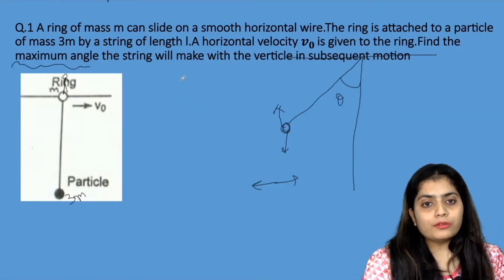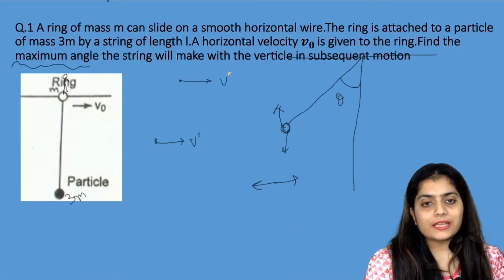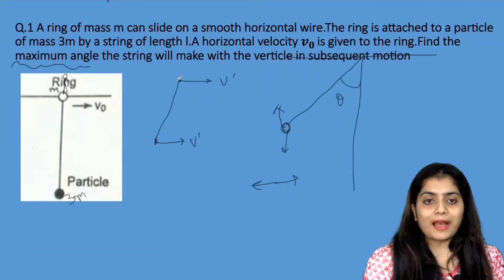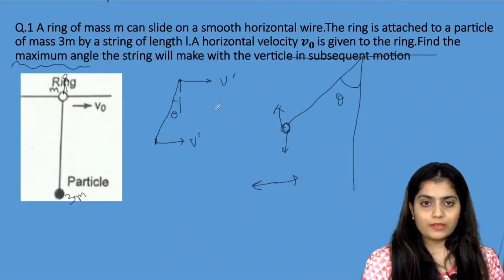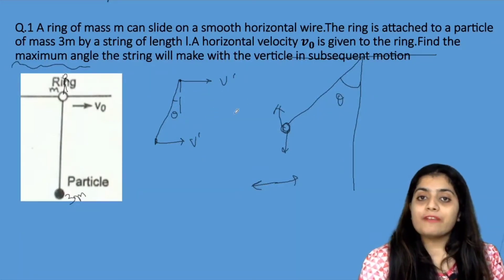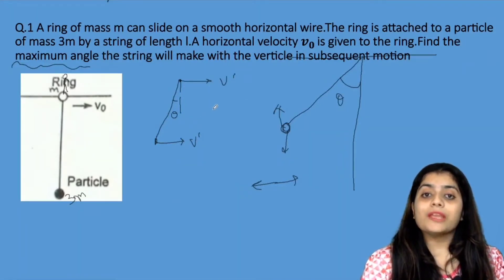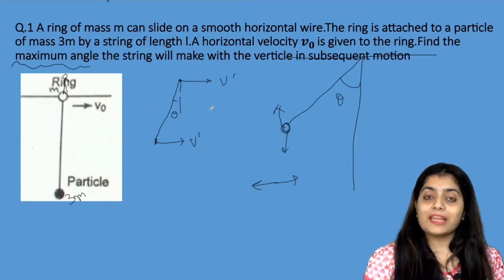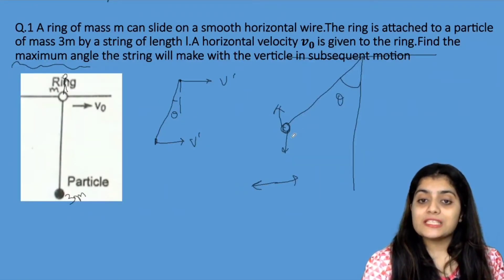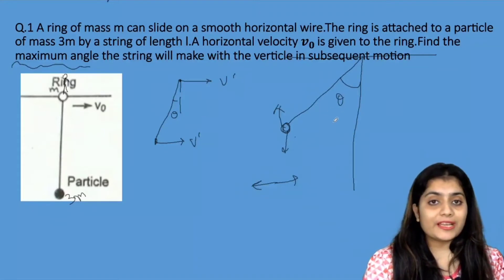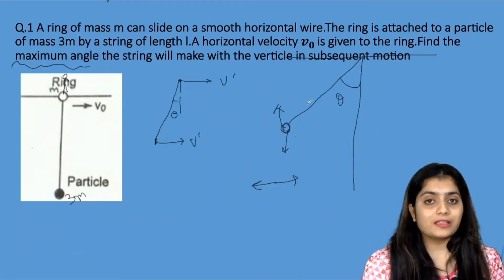We have seen this in relative motion. When the velocity of both are the same, theta will be maximum. We need to find the value of V'. Why must the relative velocity be zero? Because we require theta to be maximum. If there is still relative velocity, theta would not yet be at its maximum.